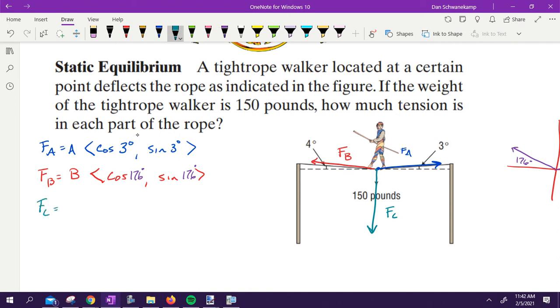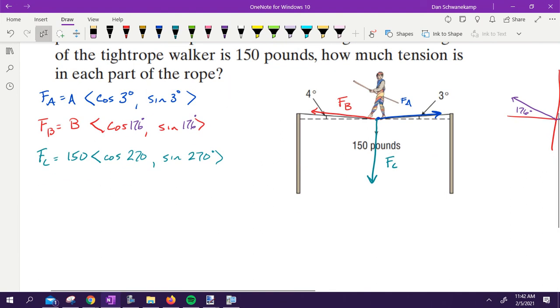Force C, how much pull does Force C have? 150. And we know it's just going to be 150 because it's going straight down. Cosine of some angle, sine of some angle. What angle? 270, because it's being pulled straight down. At this point, I don't like it in that form. I'm going to go ahead and distribute in here so we get our actual angle.